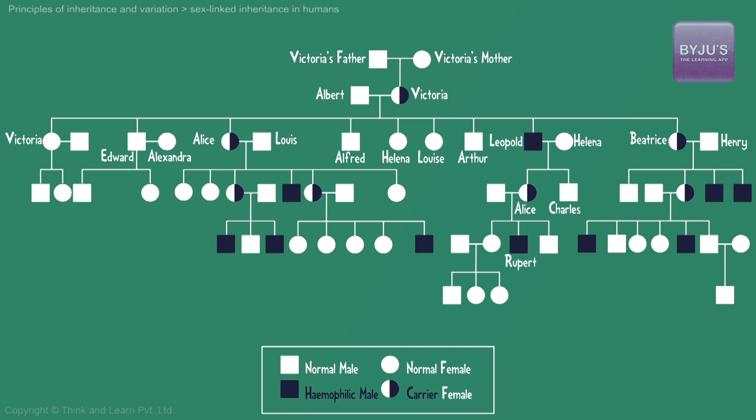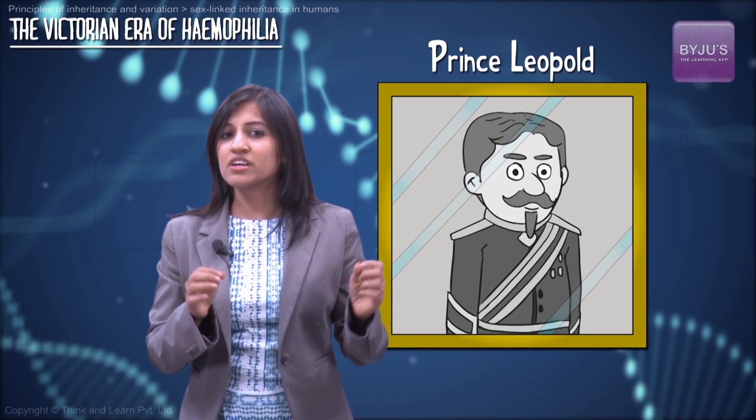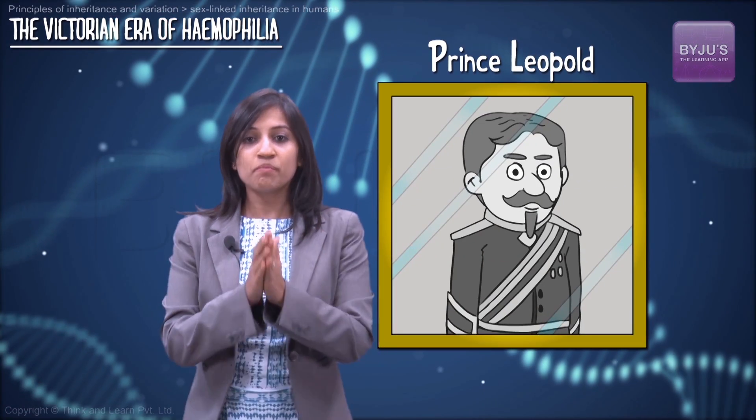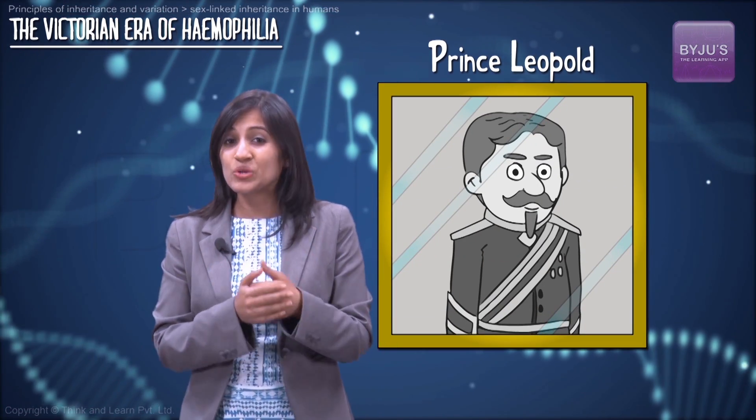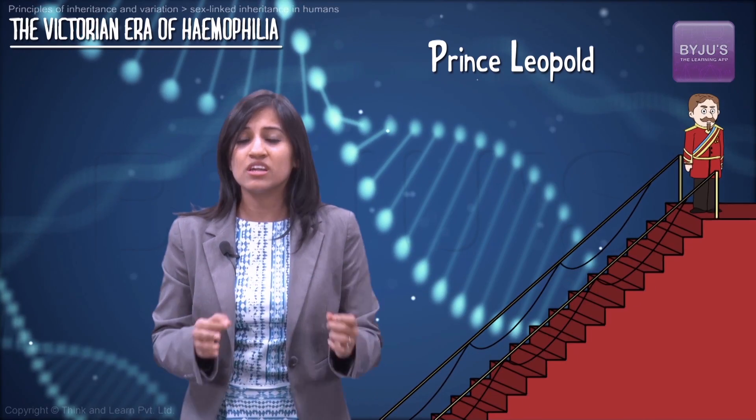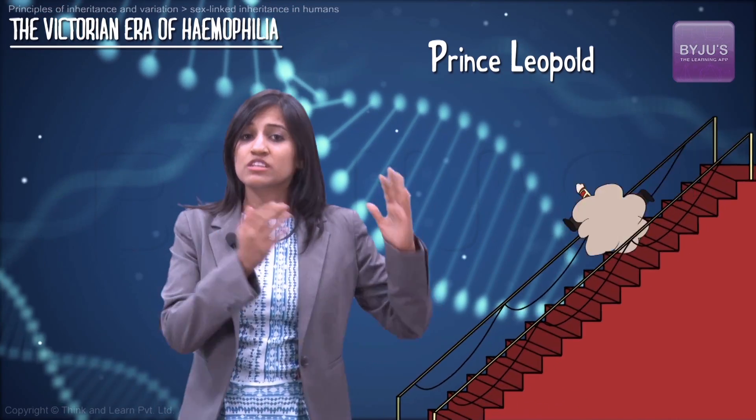Victoria's numerous children intermarried with the royal houses of Europe, spreading their medical problems into Prussia, Spain, and even pre-revolutionary Russia. Prince Leopold was Queen Victoria's youngest son. Interestingly, Queen Victoria chose to use chloroform during delivery of this prince, and thus sanctioned the use of anesthesia for the first time in childbirth.